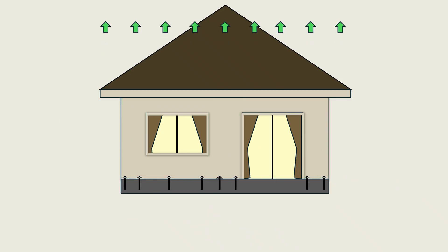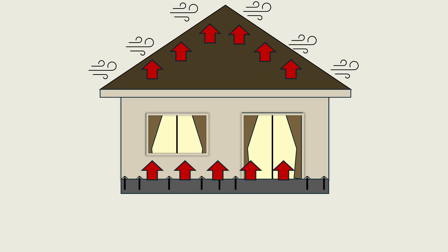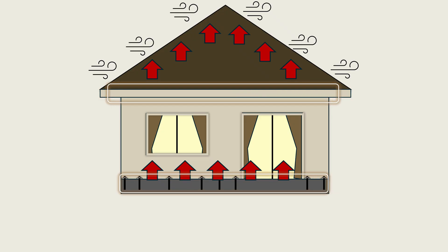Finally, we have uplift forces — vertical forces that act upwards on the structure, opposing the weight of the building. Wind forces flow over and around the roof and create pressure differences that tend to lift the roof assembly away from the walls. The net effect of uplift is to attempt to separate the structure above from the supporting foundations below. To resist this action, the roof framing must be securely tied to the walls and the walls must be anchored to the foundations. Anchor bolts provide the direct means of securing the bottom of the wall to the foundations, ensuring that uplift forces are safely resisted and that the structure remains firmly in place.